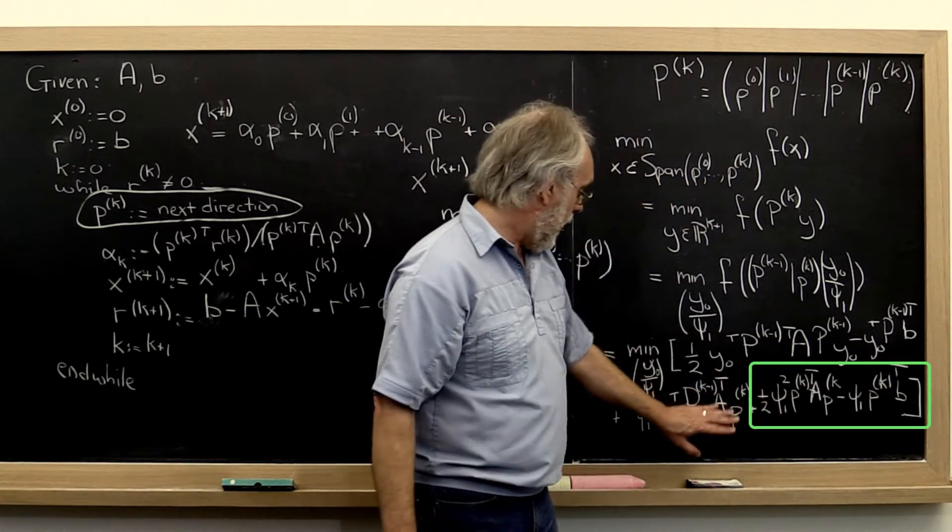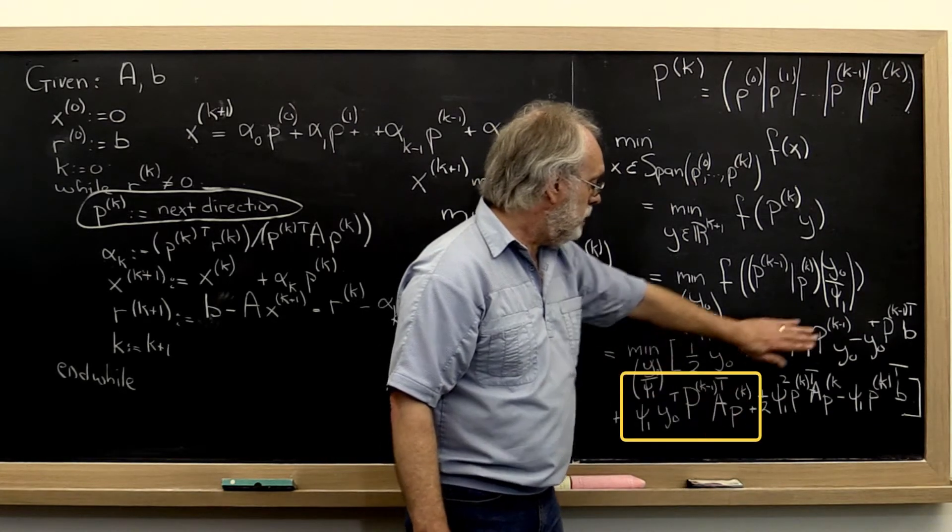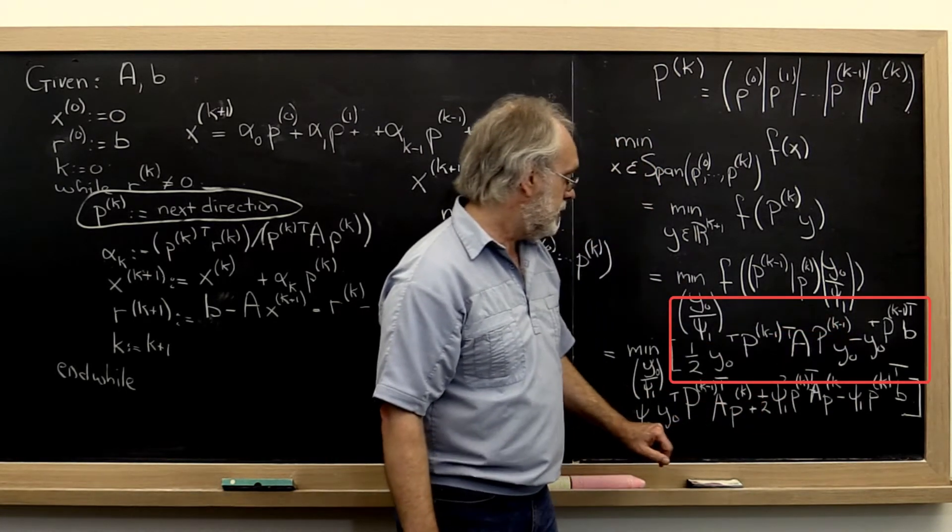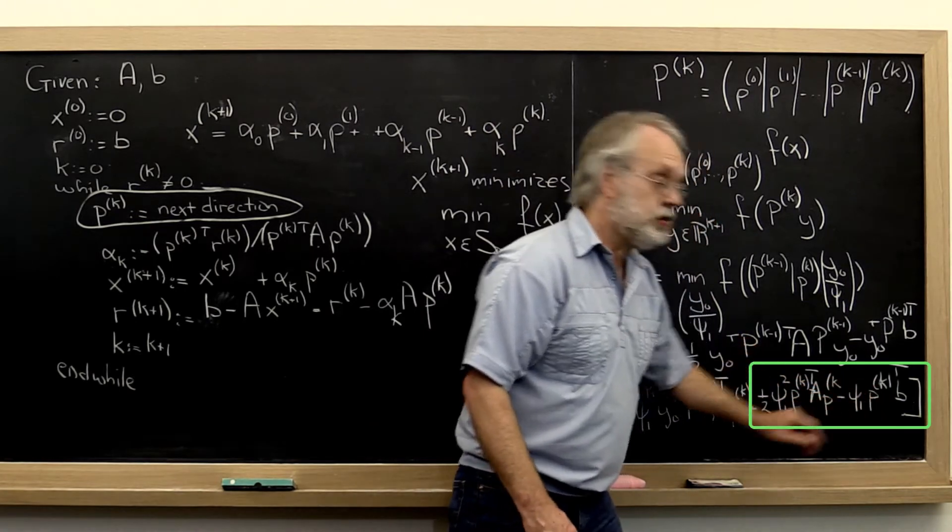So if we can make this disappear, then we can minimize over these terms separate from minimizing over these terms.